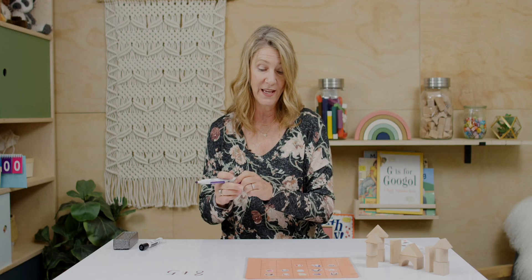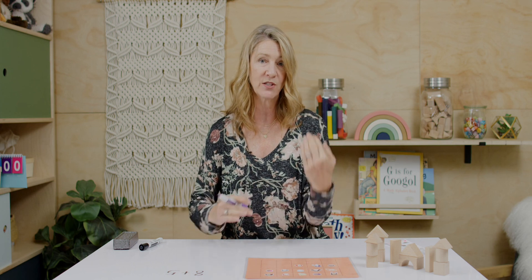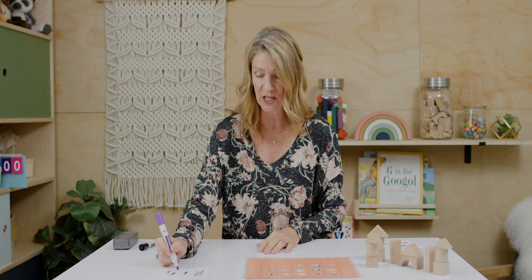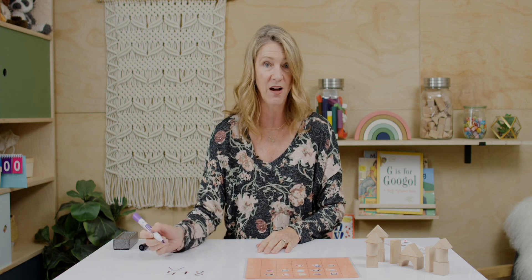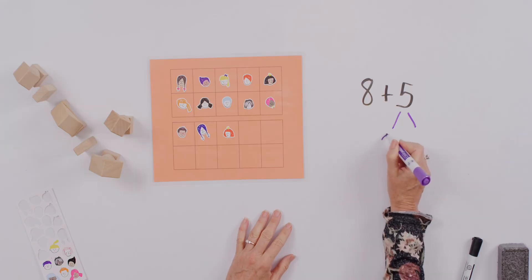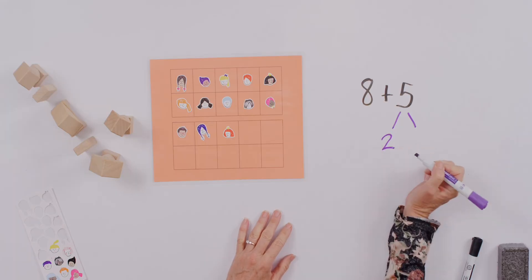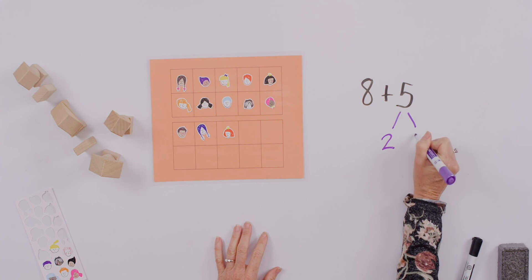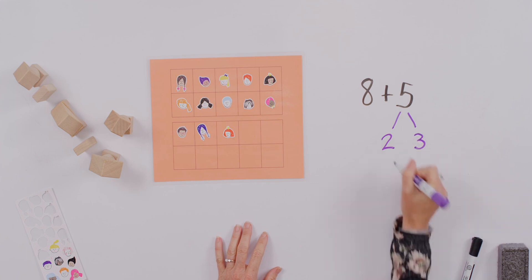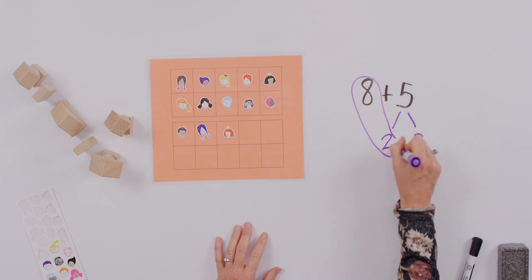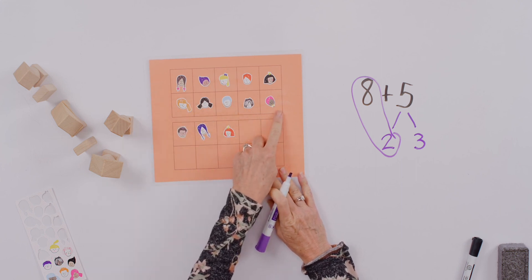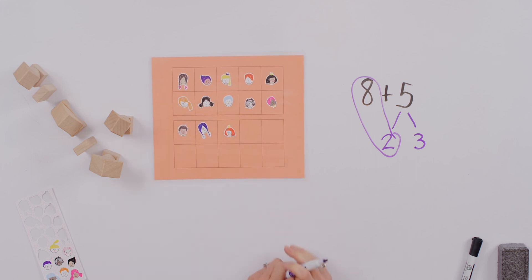So we can think about it like this. If we're always looking for the make ten combination, let's make a number bond out of five, prepping to make eight plus two into a ten, and that gives us three here. And so we can think about that eight. We had eight, we added two more that gave us ten, and then we had our three here.